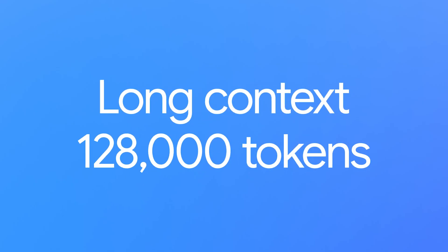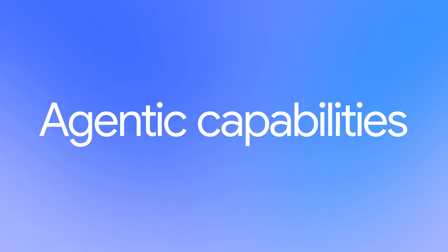And responding to your requests, we've also significantly increased the context window to 128,000 tokens. That's like feeding the model an entire novel at once. This allows Gemma 3 to understand and process vast amounts of information, leading to more coherent and insightful responses. And for building intelligent agents, Gemma 3 offers improved function calling and structured output, making it easier to integrate with other tools and services.